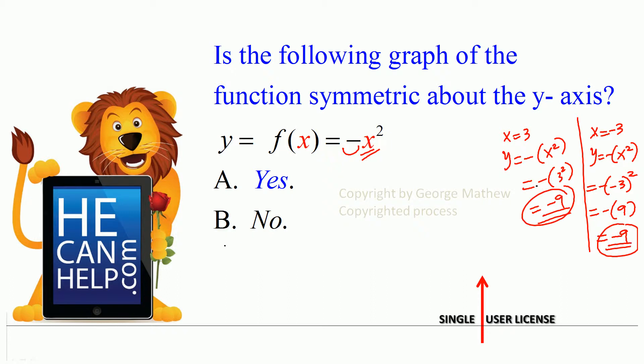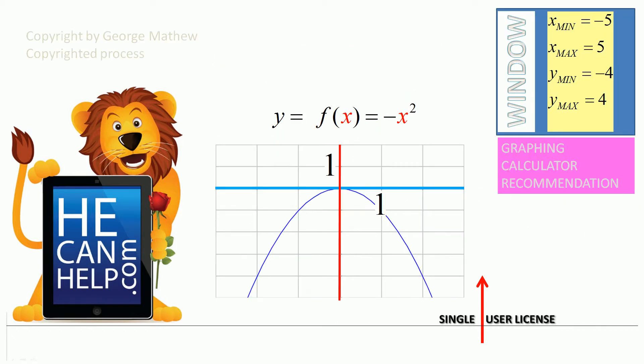So you see the y value is the same whether we use positive x or negative x. For that reason, this graph is going to be symmetric about the y-axis, and as you can see it is symmetric about the y-axis.